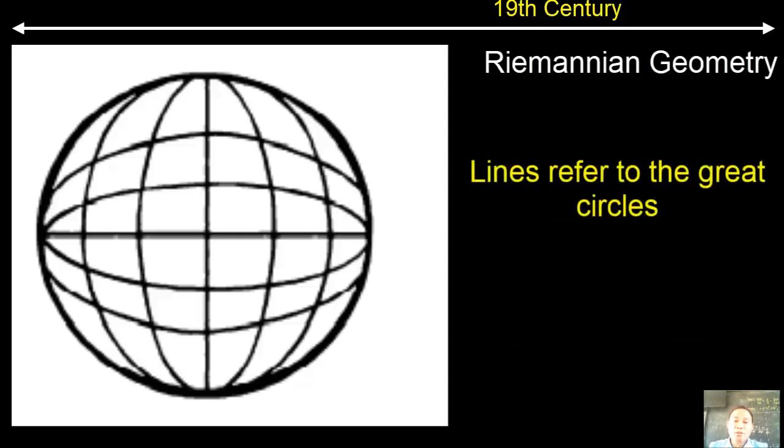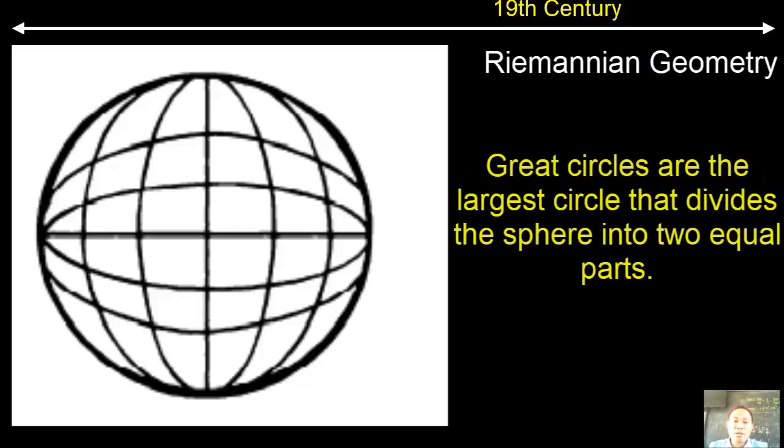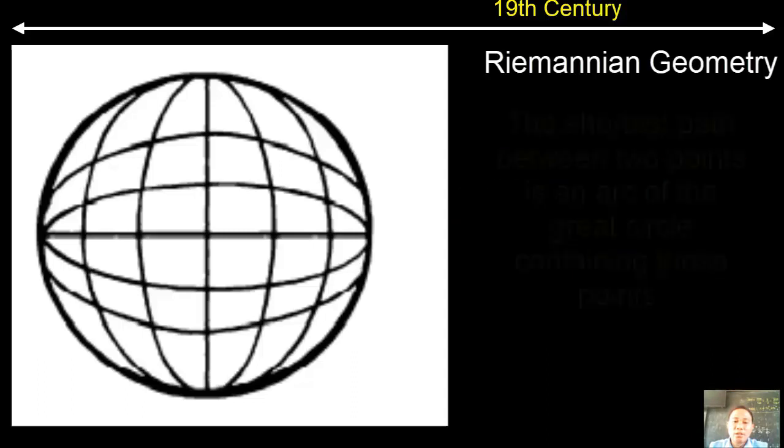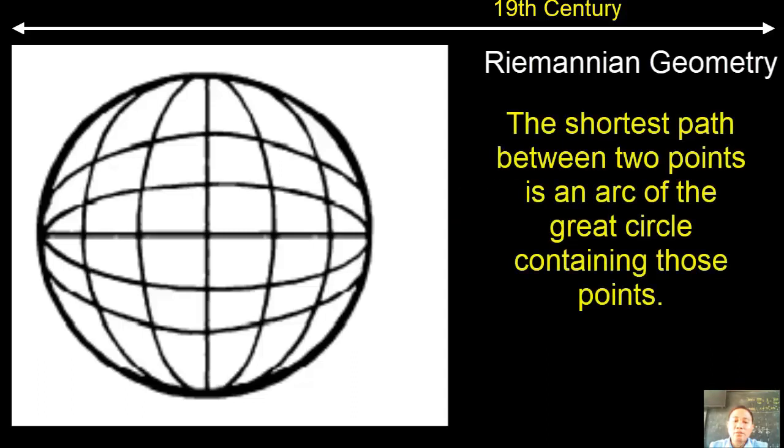The great circle divides the sphere into two equal parts. It is really great because it is the longest circle that can be drawn on the sphere. The shortest path between any two points or any locations is an arc, where this arc is a great circle containing those points. Any great circles, as you can see, intersects. So this geometry has no parallel lines.